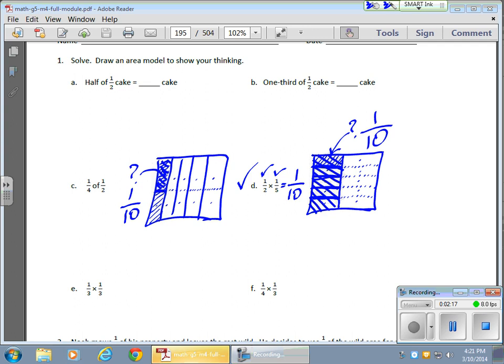So 1 half of 1 fifth equals 1 tenth, or 1 fifth of 1 half equals 1 tenth as well. And that works because of the commutative property. The order does not matter.